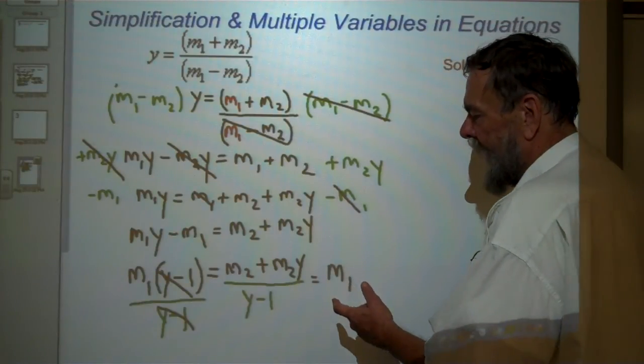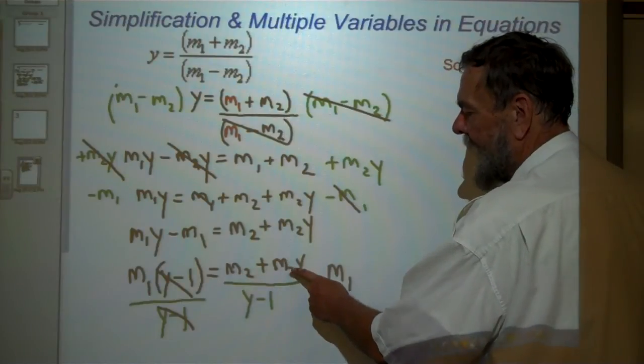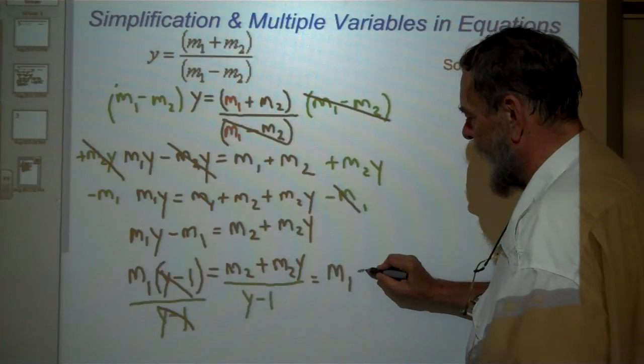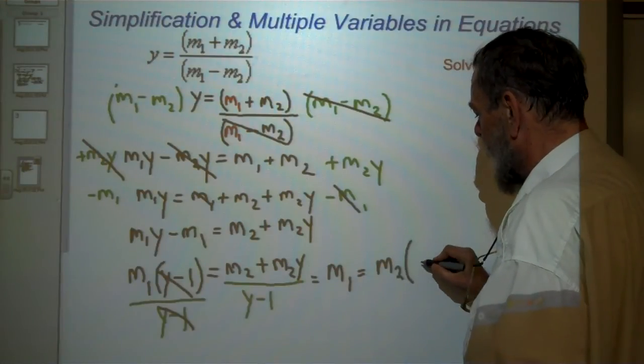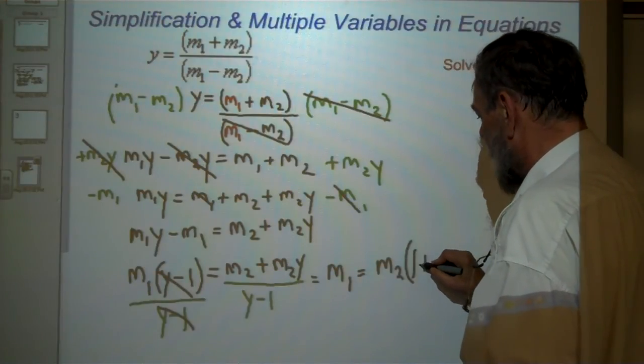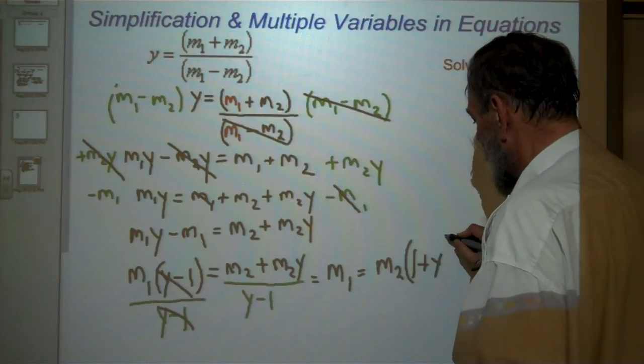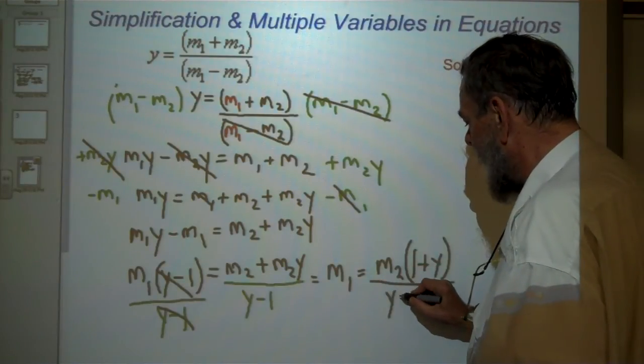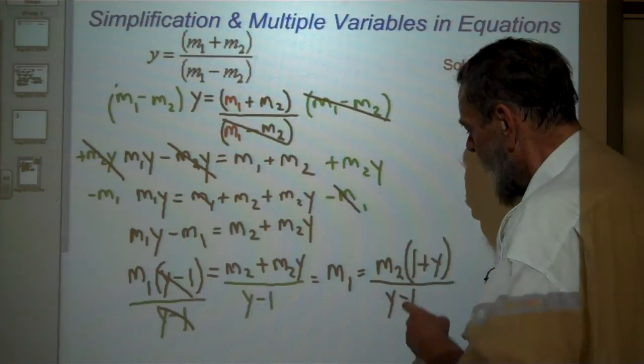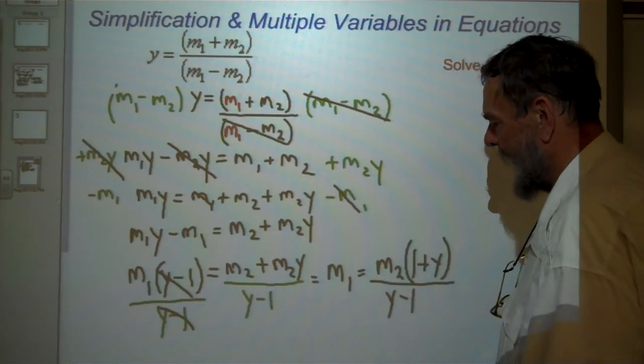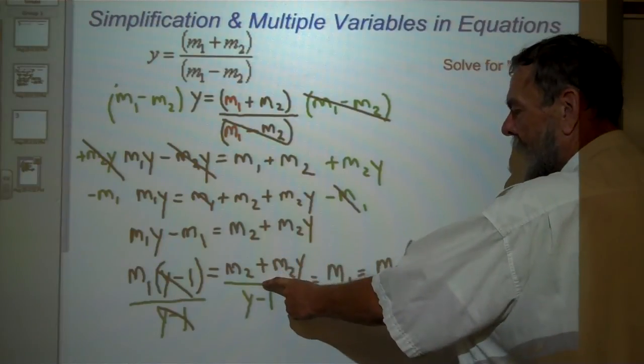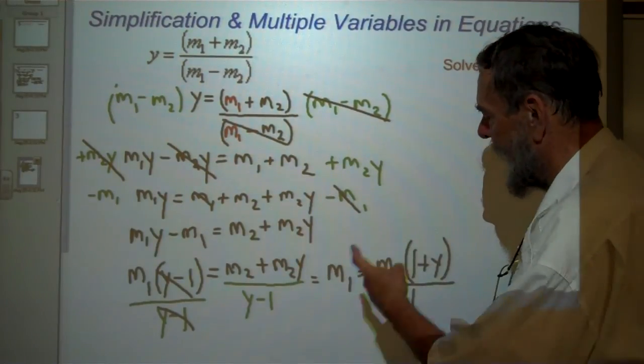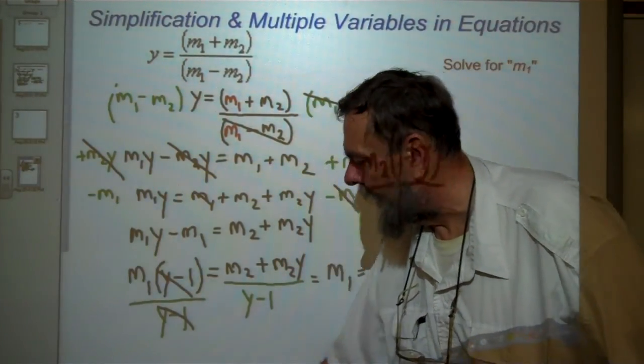One other question comes up. If you could take this and factor it and gave us M2 times the quantity 1 plus Y over Y minus 1, is this the same as that? Yes. What if you gave us this? Full credit. What if you wrote that? Full credit. They both will give you the same answer.